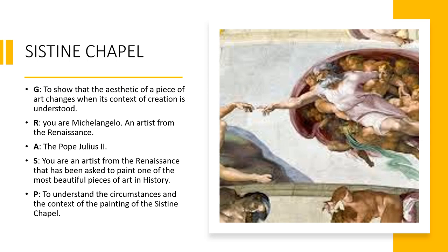The role of the students is: you are Michelangelo, an artist from the Renaissance. Your audience is Pope Julius II, the one who commissioned the Sistine Chapel. The situation is that you're a Renaissance artist asked to paint one of the most beautiful pieces of art in history. The product is to understand the circumstances and context of the painting of the Sistine Chapel — which is exactly what students are doing in those pictures, experiencing how Michelangelo painted so they can contextualize the learning.